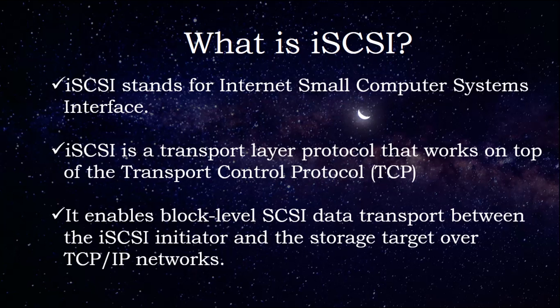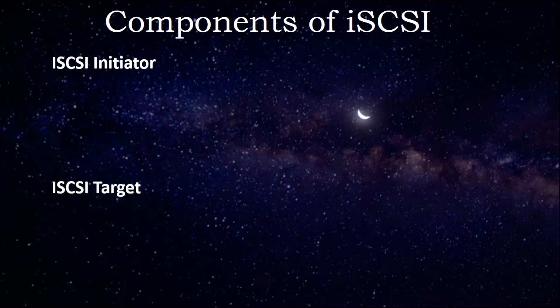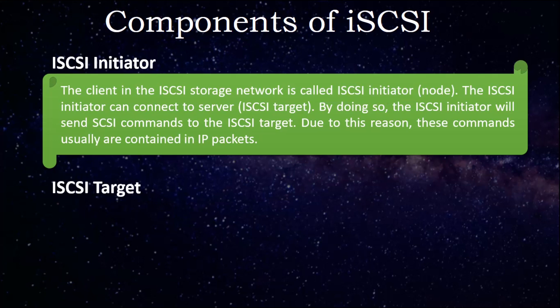The components of iSCSI are divided into two main components: iSCSI initiator, also called client, and iSCSI target. The client in the iSCSI storage network is called the iSCSI initiator. The iSCSI initiator can connect to the server, called the iSCSI target, and will send iSCSI commands to the iSCSI target contained in IP packets.